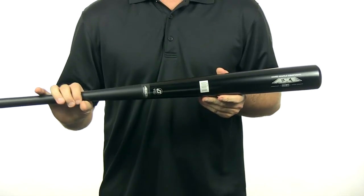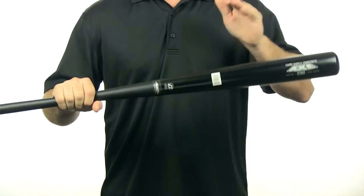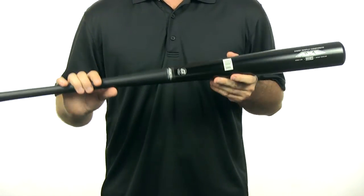This bat is BB Core certified and has a composite handle and a maple barrel and comes with a 120 day warranty and free shipping. So you can check out this bat today at JustBats.com, we'll see you there.